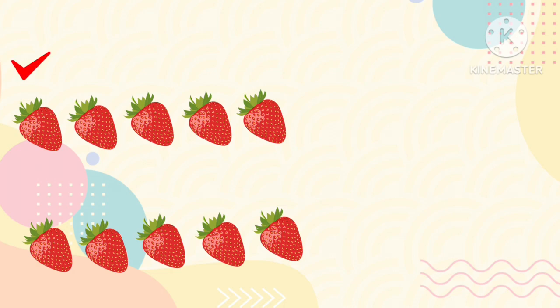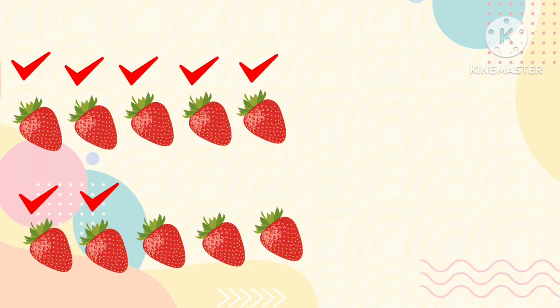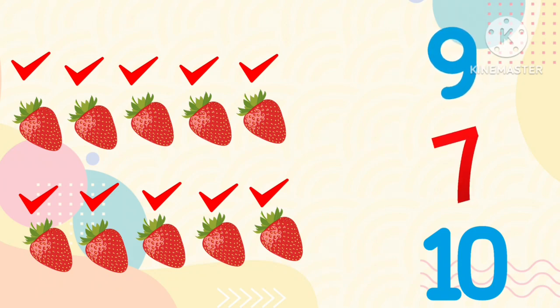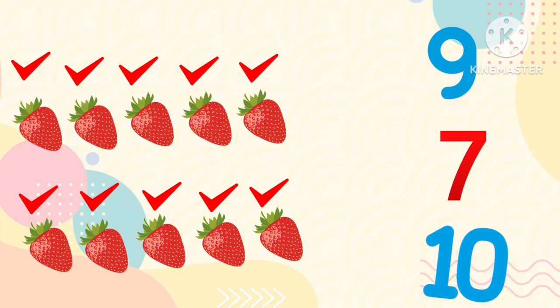How many strawberries are here? Shall we count? 1, 2, 3, 4, 5, 6, 7, 8, 9, 10. There are 10 strawberries. Is it 10? No. Is it 10? No. Is it 10? Yes, it is 10.